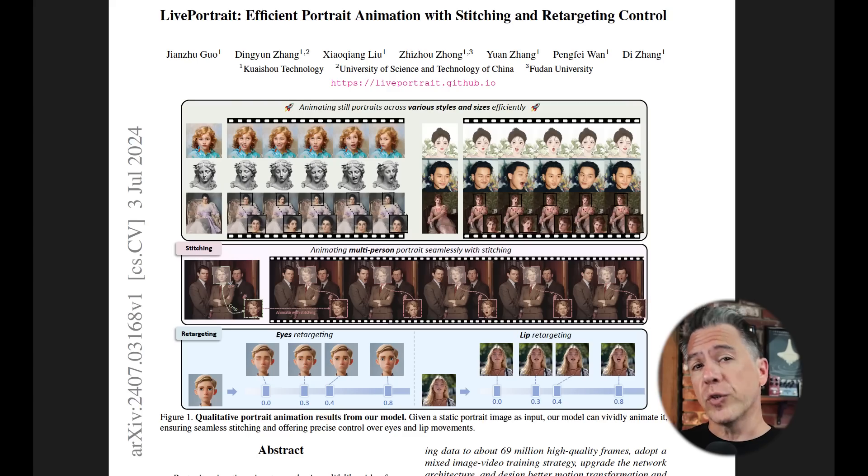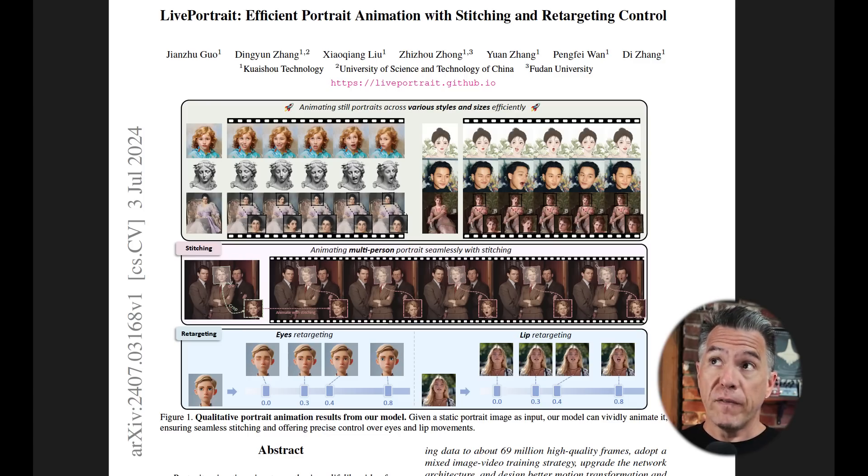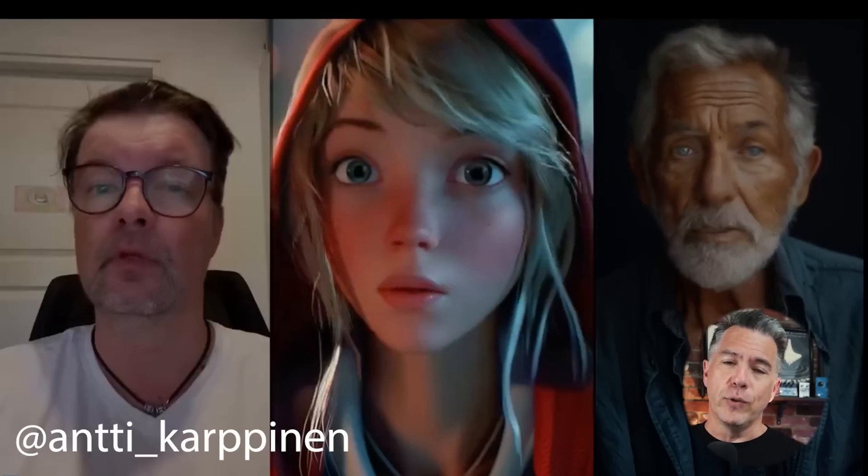First up, we have a new approach to AI character expression, although it is still sort of stuck in that AI avatar box, but not for long. This is Live Portrait from Kwaishu Technology. And yes, that is the same company that brought us the AI video generator Kling. As a quick aside, having done a tutorial on Kling a few videos ago, I know a number of you are still having trouble getting access to it. I am hopeful that I'll have something for you later this week. At least in the meantime, you can use Live Portrait now. I'll talk more about that in just a minute.